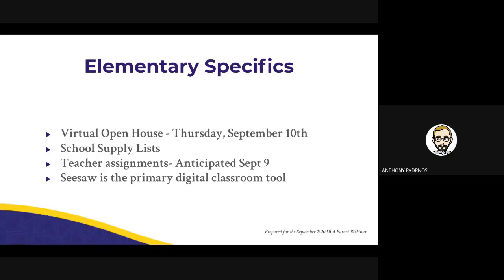Elementary supplies: we mentioned we're going to get those posted. There are questions about secondary supplies — we are still working through the needs around secondary supplies beyond traditional notebooks, pens, and pencils. We will get those posted soon, and when we send a communication early next week we will remind for both school supply lists where you can find them. Regarding Seesaw: Seesaw for K through 5 is the primary digital classroom tool. That is the tool teachers will use to create their digital learning space, post assignments, as well as their virtual meeting links.